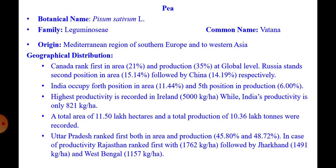Highest productivity is recorded in Ireland at 5000 kg per hectare, while in India it is only 821 kg per hectare, which is very low. Total area of 11.50 lakh hectares and total production of 10.36 lakh tonnes were recorded. Uttar Pradesh ranks first both in area and production. In case of productivity, Rajasthan ranks first with 762 kg per hectare, followed by Jharkhand and West Bengal.